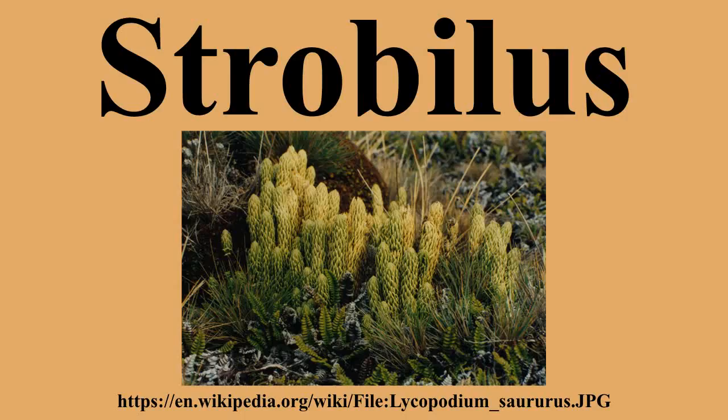A strobilus is a structure present on many land plant species, consisting of sporangia-bearing structures densely aggregated along a stem. Strobili are often called cones, but many botanists restrict the use of the term cone to the woody seed strobili of conifers. Strobili are characterized by a central axis surrounded by spirally arranged adecosate structures that may be modified leaves or modified stems.